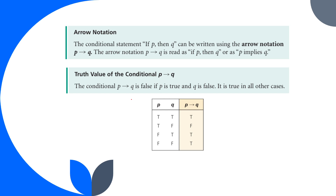Arrow notation: the conditional statement 'if p then q' can be written in arrow notation as p → q. This reads as 'if p then q' or 'p implies q.'